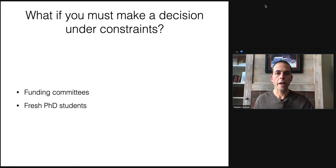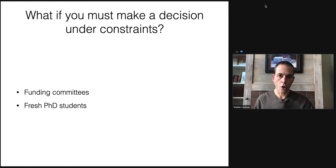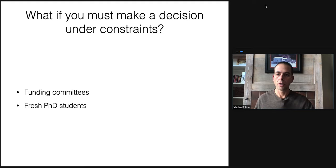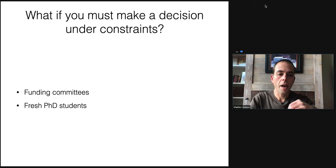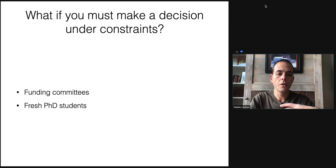But what if you can't? In some circumstances, there are people who need to make decisions about a researcher's work that do not have the time or the means to engage with it at the right level of depth. There are two populations that I want to keep in mind throughout this talk: funding committees and fresh PhD students looking for an advisor. Both of these populations need to make judgments about researchers and about the ability of researchers to allocate resources to produce impactful work.